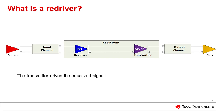In addition to the RX equalizer to compensate the frequency-dependent channel loss on the input side, it can also optionally provide transmitter linear equalization to compensate for the channel loss on the output side. When the channel loss is properly compensated, the result is a compliant signal at the sink's receiver.